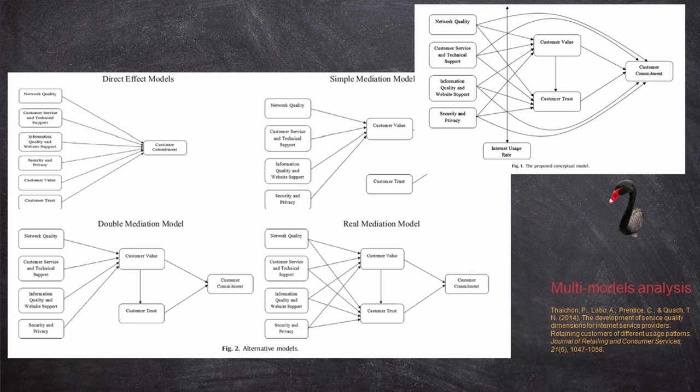Next one is for survey studies. In one paper, the editor asked for more value to be added. Since it's hard to add more constructs when data is already collected, what we did was conduct a multigroup analysis. With the same dataset — luckily we had about 3,000 survey participants — we tested a few different models to see what the best model would be. To be honest, this is more of a band-aid strategy: you're not really fixing anything fundamentally, but you try to add a little bit of value to the paper.